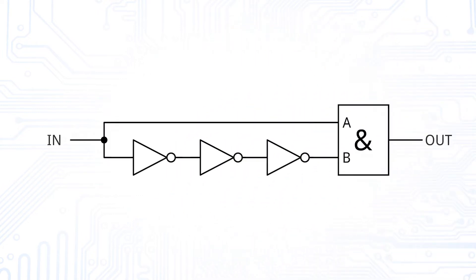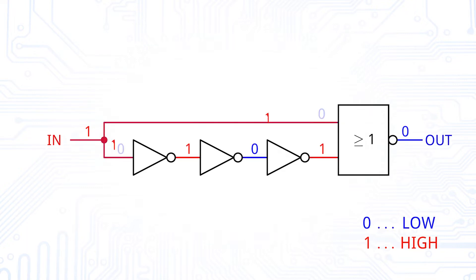We can create another monostable that is sensitive to falling edges on the input by replacing the AND gate with a NOR gate. We can simulate this behavior again. When the input is low and it goes to high, nothing happens and the output remains low. If the input is changing from high to low, the output switches to high until the delayed input reaches the second NOR gate input.